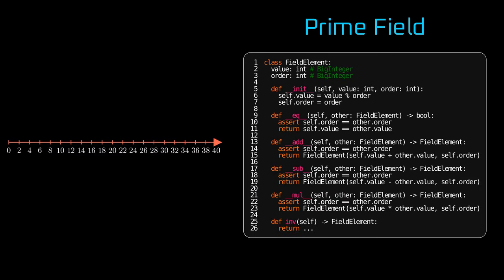Now let's code prime fields. We'll need a class that has two fields: the value of a given element and the order of our prime field. We can benefit from Python support for big numbers, as in many other languages we would need to use specially designed types to support large enough values. When initializing a field element with value and order, we must remember to store the value modulo the order. We can now define our arithmetics by overloading equality, addition, subtraction, and multiplication operators. Each will start by asserting we are operating on a pair of fields with the same order, as operating on fields of different order doesn't make sense in our context.